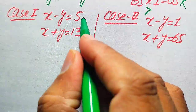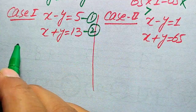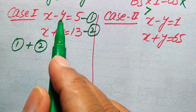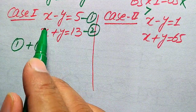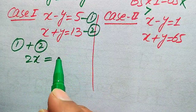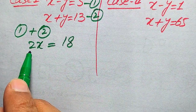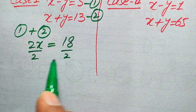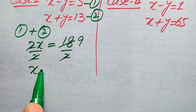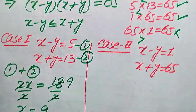We call x minus y = 5 equation 1 and x plus y = 13 equation 2. Adding equations 1 and 2, the y terms cancel, giving 2x equals 5 plus 13, which is 18. Dividing both sides by 2, we get x equals 9.